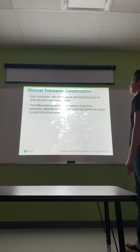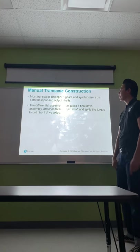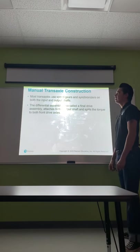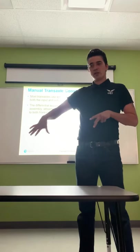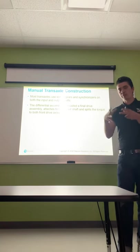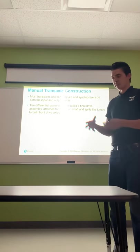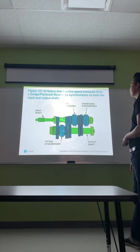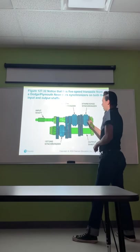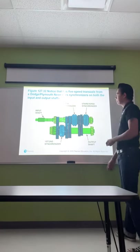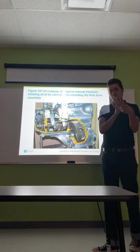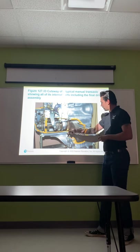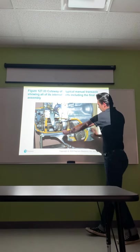Manual transaxle construction: most transaxles use speed gears and synchronizers on both the input and output shafts. The differential assembly, also called a final drive assembly, attaches to the output shaft and splits torque to both front wheels. Instead of having a differential in the rear of the vehicle, because we're talking about front-wheel drive, the differential is combined with the transmission — that's why it's called a transaxle, a transmission and an axle at the same time. This five-speed transaxle from the Dodge Neon uses synchronizers on both input and output shafts. Because we're working with a much smaller package, we engage certain gears off the counter shaft as well. The final drive has the pinion gear, ring gear, spider gears inside, and axles coming out both ends.